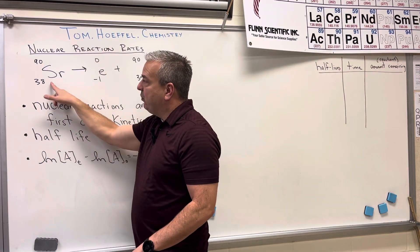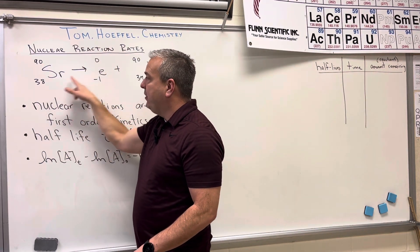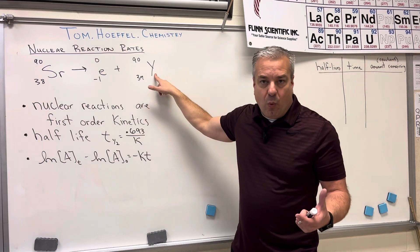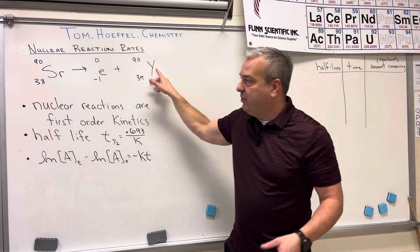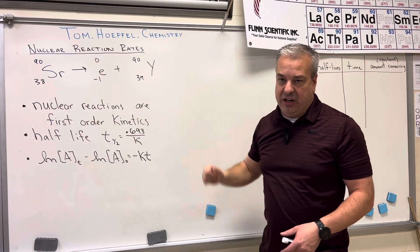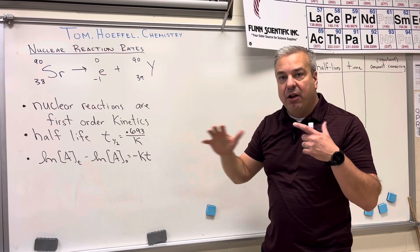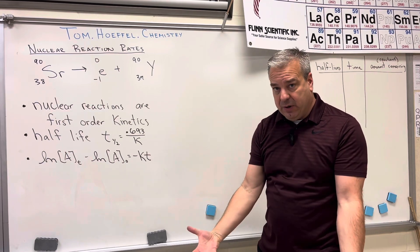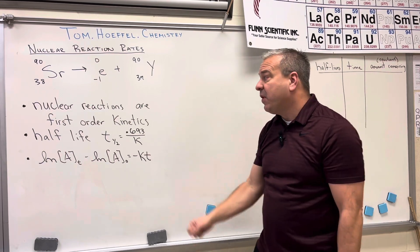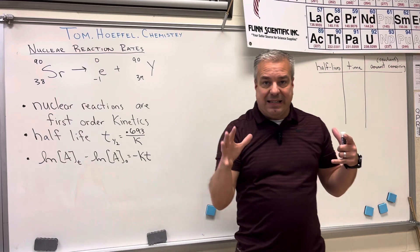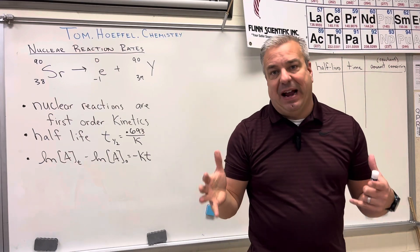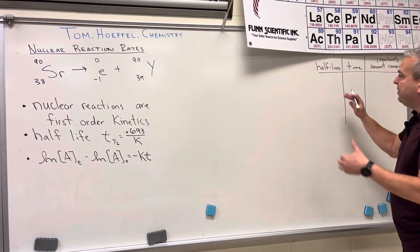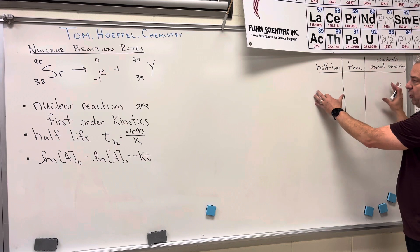The example we're going to use today is strontium-90 going through beta decay, making element Y. So the strontium (Sr) is changing into Y through beta decay. But how fast is it going to occur? Well, it relates to the idea of half-life. We're going to set up a chart that talks about half-lives, time, and amount.